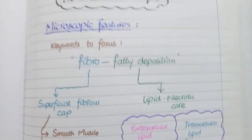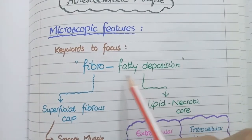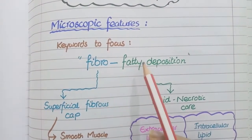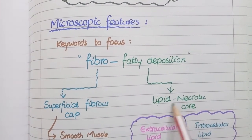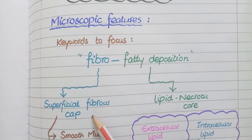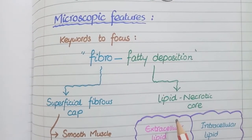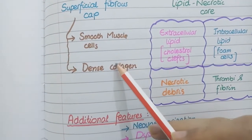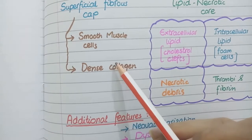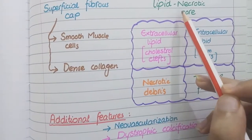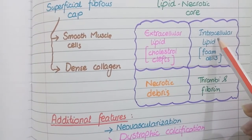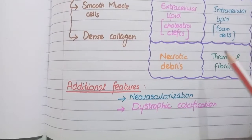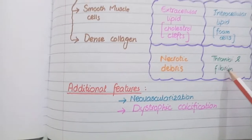For microscopic features of atherosclerotic plaque, the keywords are fibro-fatty deposition. Fibro means the plaques have a superficial fibrous cap, and fatty means that deep to this fibrous cap there is a lipid-rich necrotic core. The superficial fibrous cap is made up of smooth muscle cells of altered phenotype that secrete a dense network of collagen. The lipid-rich necrotic core contains lipid extracellularly in the form of cholesterol clefts, and intracellularly as vacuoles in macrophages known as foam cells. The necrotic core also contains necrotic debris and few thrombi of platelets and fibrin.